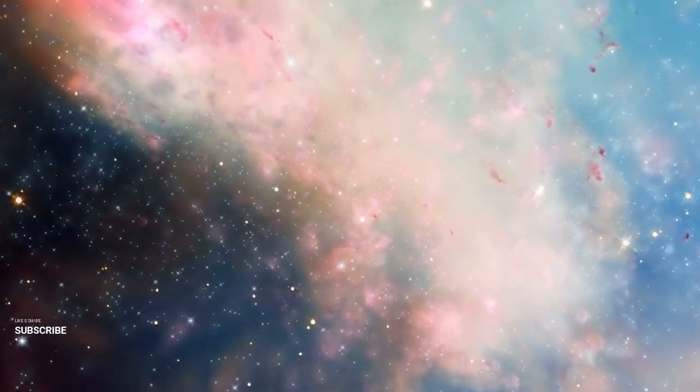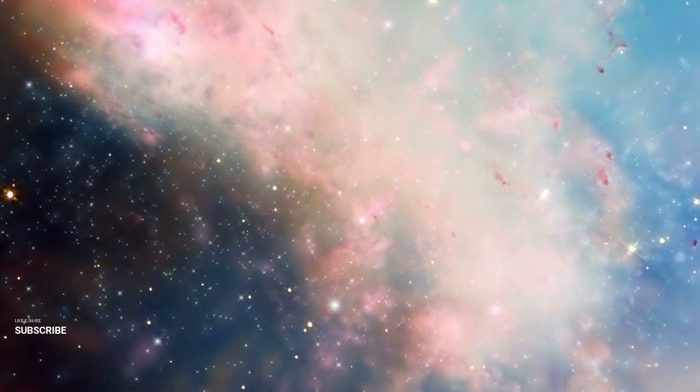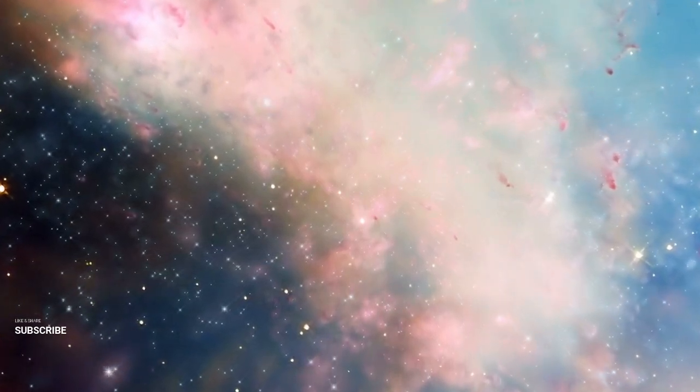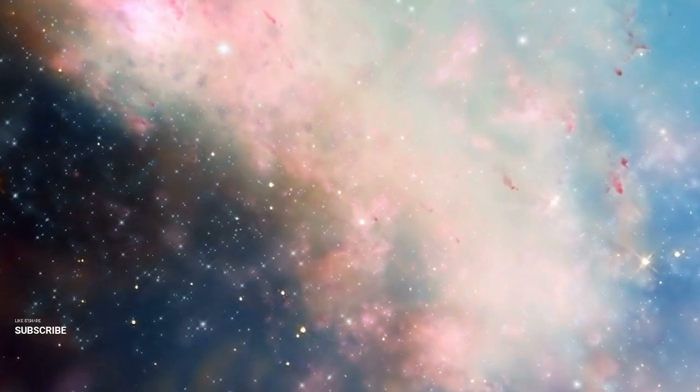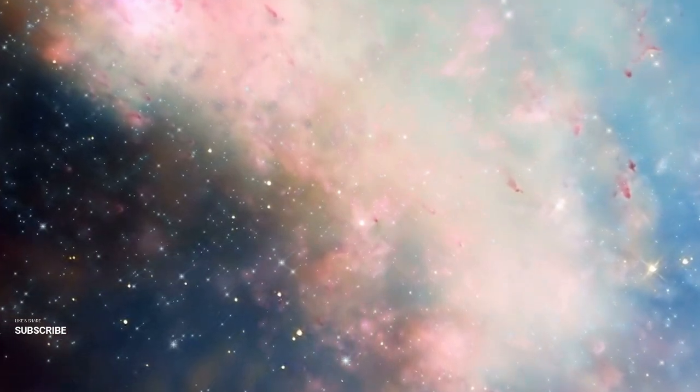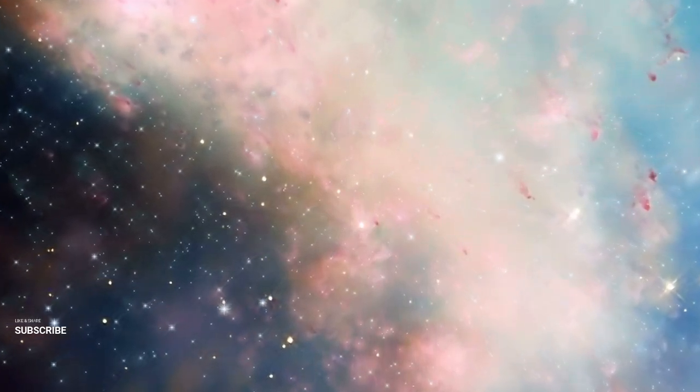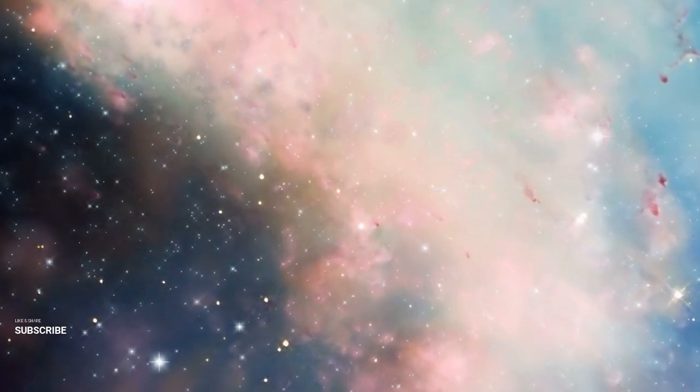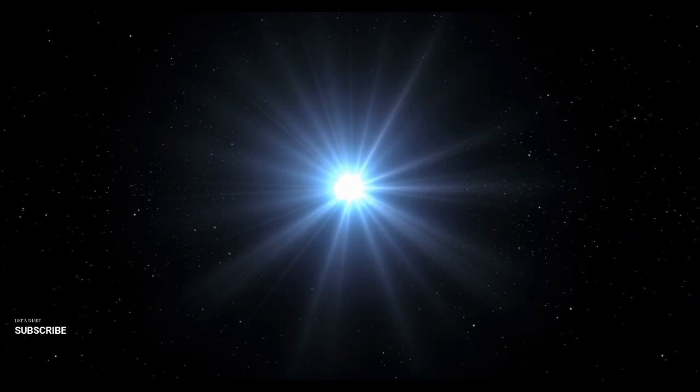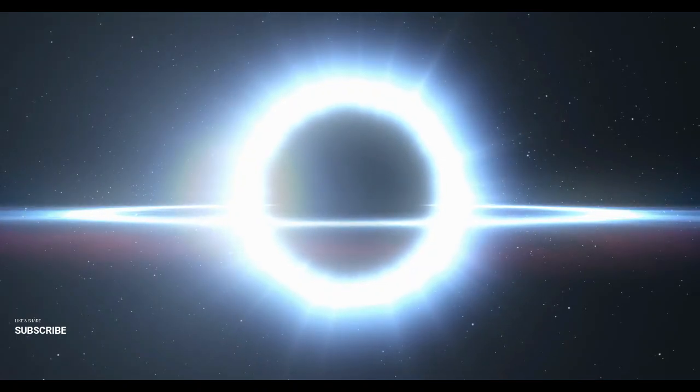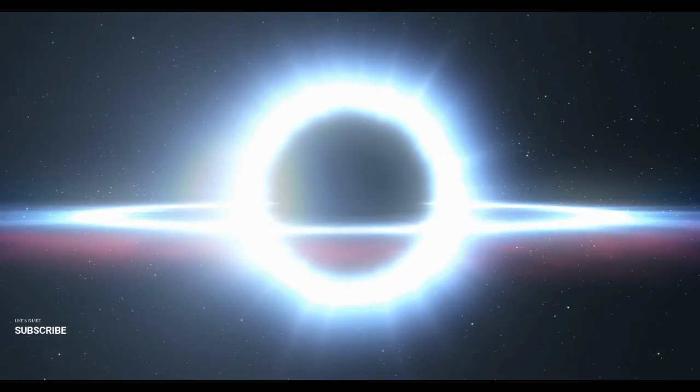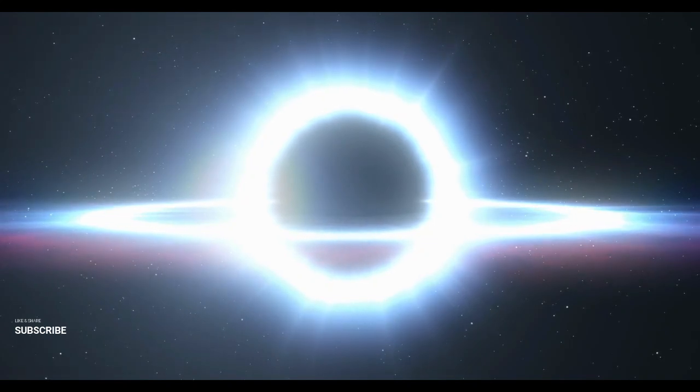But fear not, intrepid explorers, for the future holds endless possibilities. Picture this: an exoplanet so infernal, so downright terrifying that it makes hell look like a vacation spot. Meet WASP-76b, the poster child for extreme planets. This bad boy orbits its parent star at a staggering 48 million kilometers. That's practically cuddling distance in cosmic terms. Why is it so hot? Well, for starters, its parent star is no slouch, a yellow-white main sequence star packing about 1.5 times the mass of our sun.